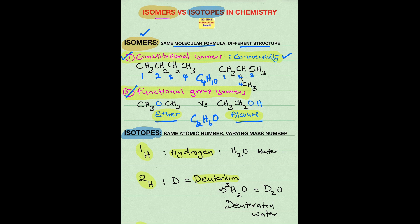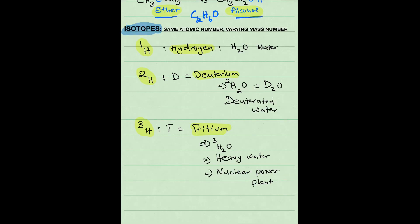So isotopes, these are atoms of the same element but with varying mass numbers. That means they have different numbers of neutrons. So for example,